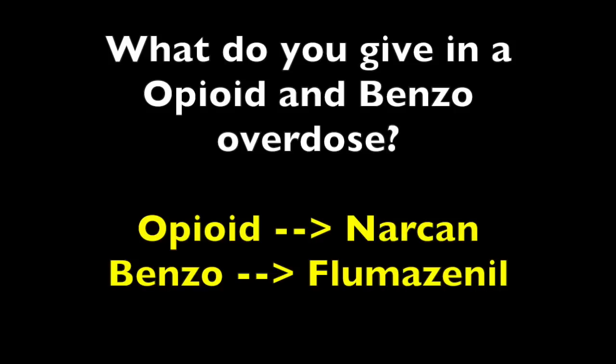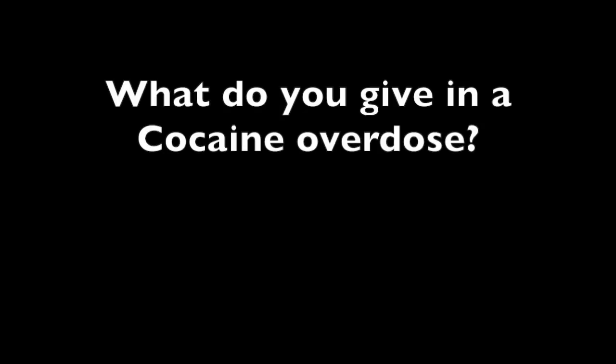For an opioid overdose you give Narcan, which is naloxone. In a benzo overdose you give flumazenil. Narcan is an opioid antagonist and flumazenil is a GABA receptor antagonist. What about illicit drugs like cocaine?